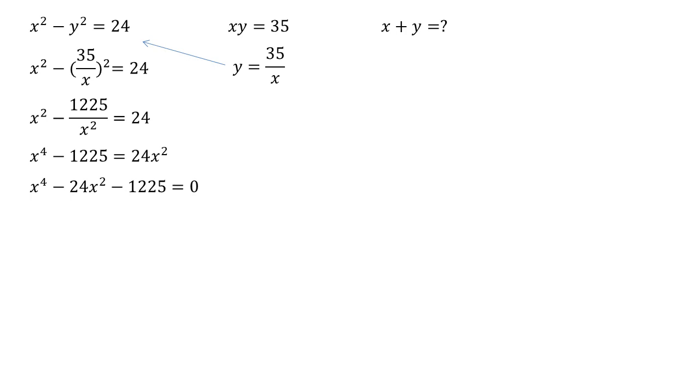Let's try and solve this by completing the square. So our x to the 4 minus 24x squared, we can put that in as x squared minus 12 all squared. We're going to take away 144 which would come from the 12 squared if we expanded the brackets.